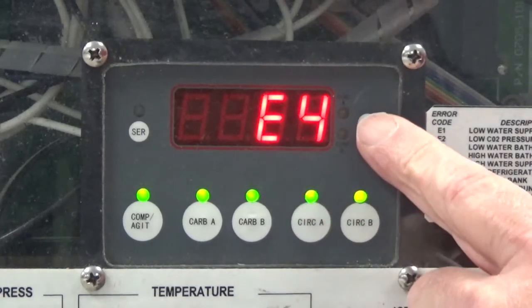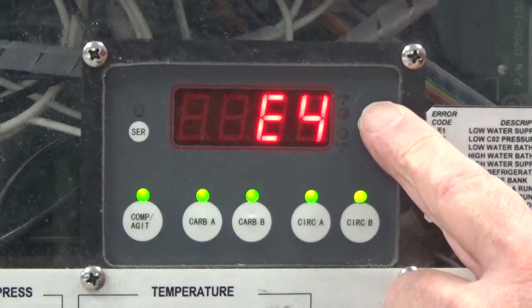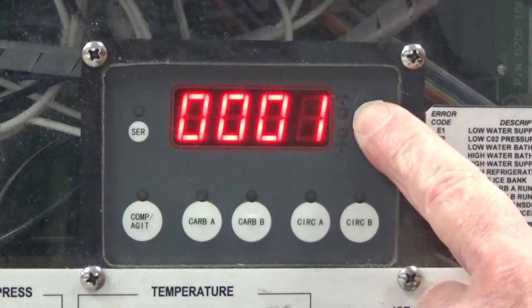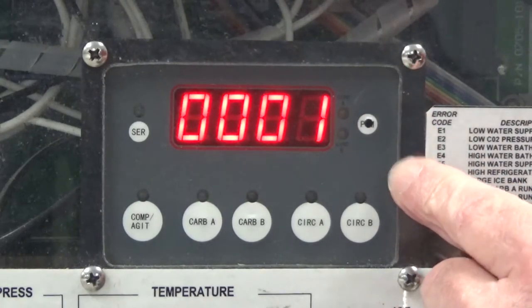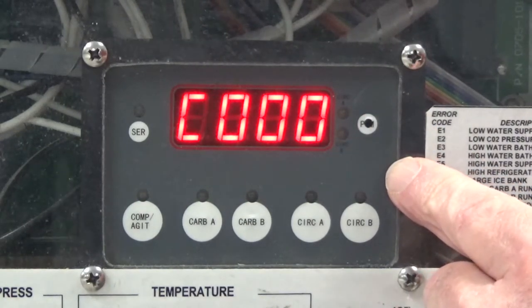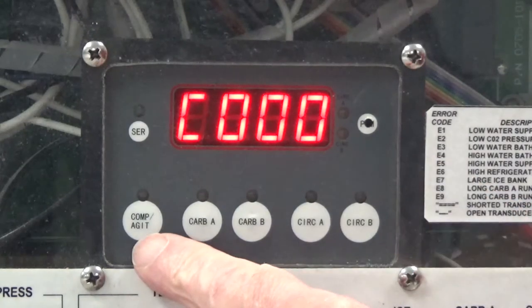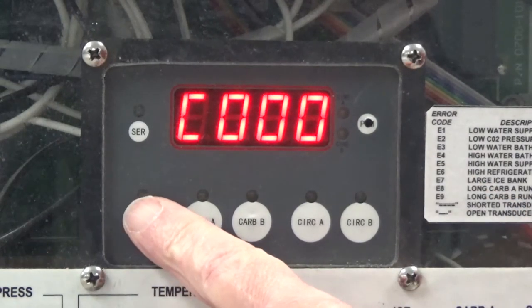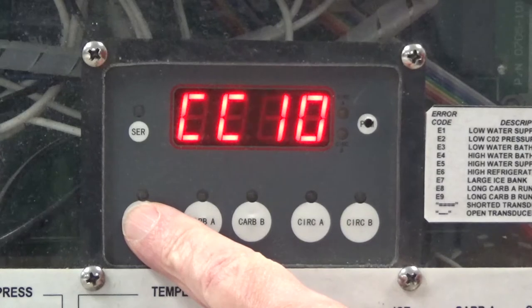Hold the PGM button in until the display changes to 0001. Release that button and the display will change to C000 on its own. Press and hold the compressor agitator button. The display should read CC11.